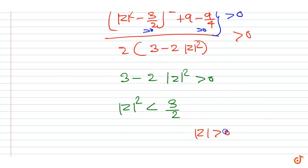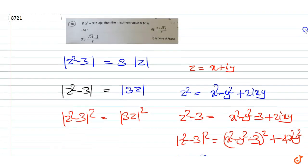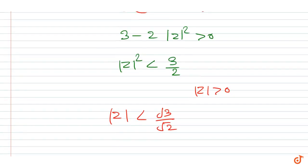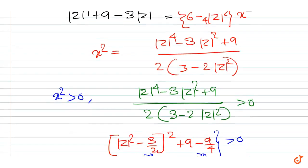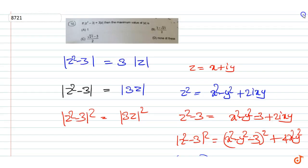Since |z| > 0, we have |z| < √3/√2 = √(3/2). Therefore, |z|_max = √(3/2). Therefore the answer is none of these.